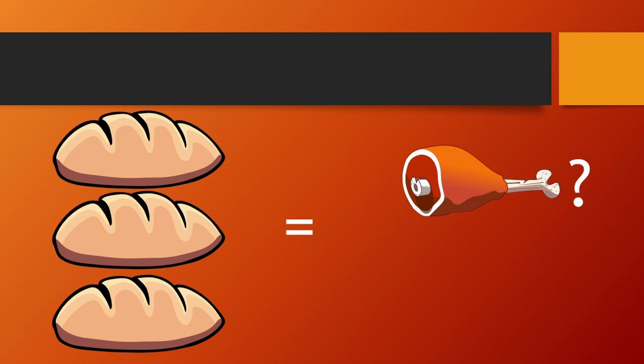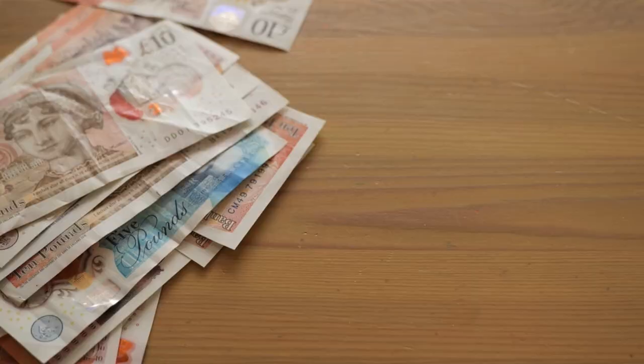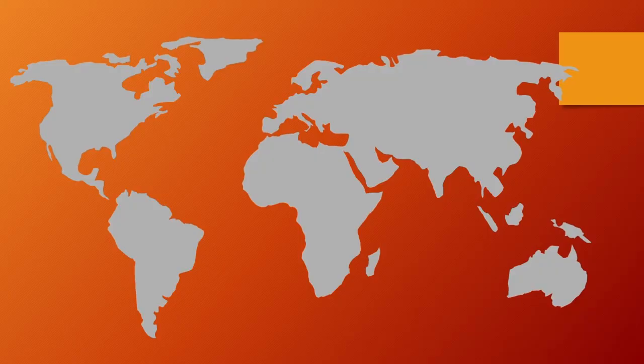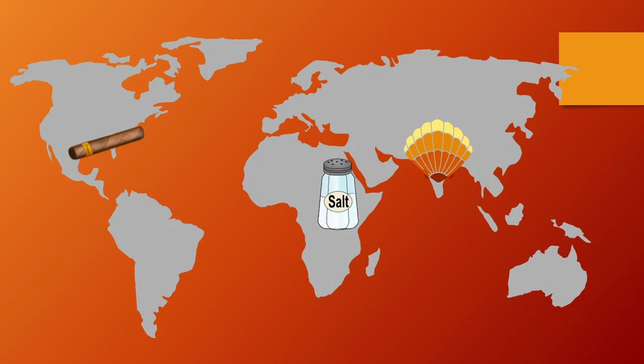Societies therefore need some form of currency. Smith tells us that different societies have used various goods as currencies in the past. He gives us examples: salt in Abyssinia, seashells in India, dried tobacco in the American South, and salted cod in New England.